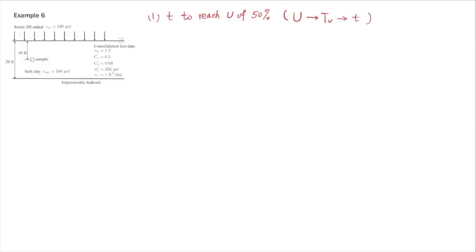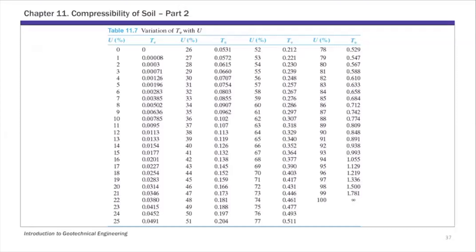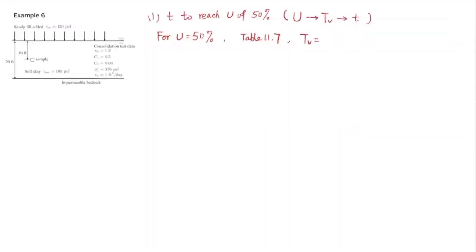For U of 50%, we're going to look at Table 11.7. We're going to look for U of 50% and the corresponding time factor. This is U of 50% and the corresponding time factor. Again, this is from Terzaghi's solution: 0.197. Again, that's from Table 11.7. So U of 50% corresponds to Tv of 0.197.